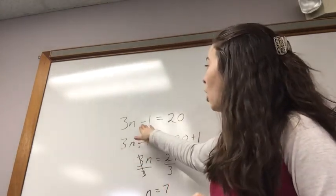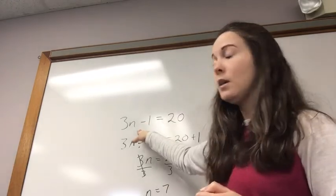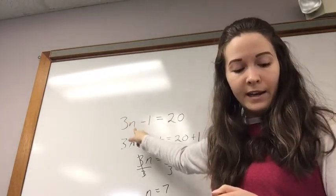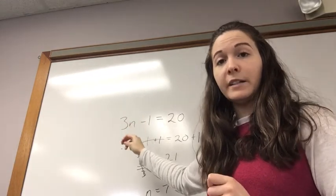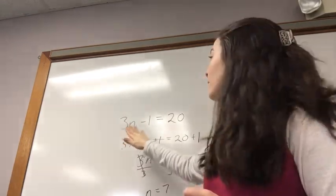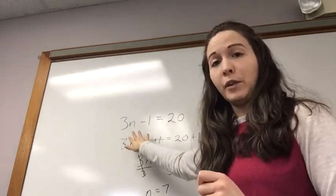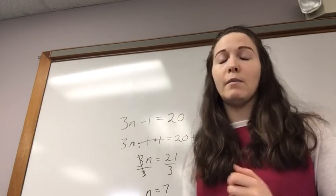all we have to do is perform the opposite operation in order to get rid of our extra number. If they are adding a number, then we need to subtract it from both sides. If they're subtracting a number like with this one, then we add the same number to both sides. And then we perform our problem as usual.